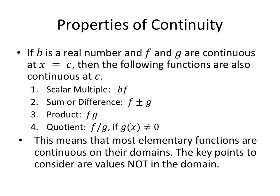Some properties of continuity. Continuity behaves like we would want it to behave. If b is a real number and f and g are continuous at x equals c, then the scalar multiple is continuous. A sum or difference of continuous functions is continuous. The product of continuous functions is continuous. And the quotient of continuous functions is continuous as long as we don't have the zero function in the denominator. What this tells us is most of our elementary functions are continuous on their domains. The key points to consider are the values that are not in the domain — if it's in the domain, we're good to go.